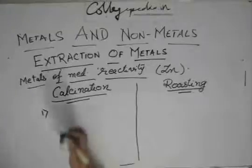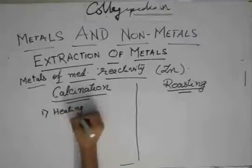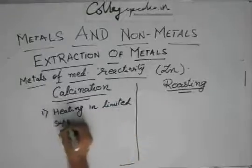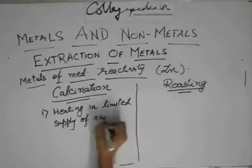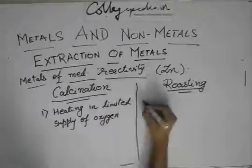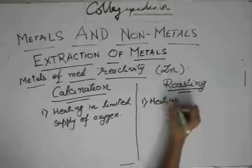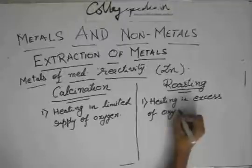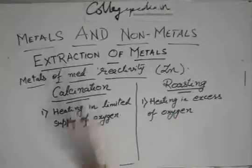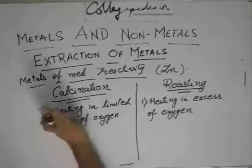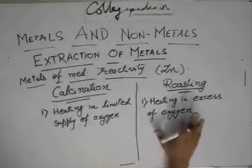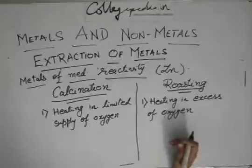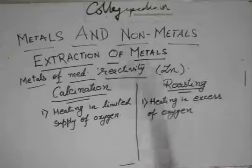Calcination is basically heating in limited supply of oxygen, while roasting is heating in excess of oxygen. Calcination there will be heating but you will limit the supply of oxygen, while in roasting you will give excess of oxygen so that it becomes heating in sufficient supply or excess of oxygen.